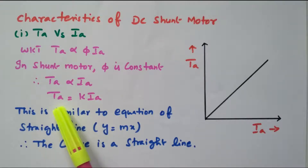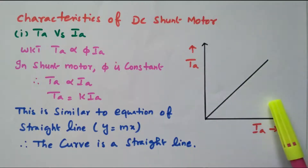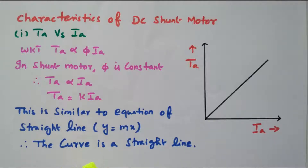When I_A increases, the torque also increases, as shown in the graph. When armature current increases, the torque also increases in a linear manner. This is similar to the equation of a straight line, Y = M × X. Due to that, the curve is also a straight line. When armature current increases, torque also increases.